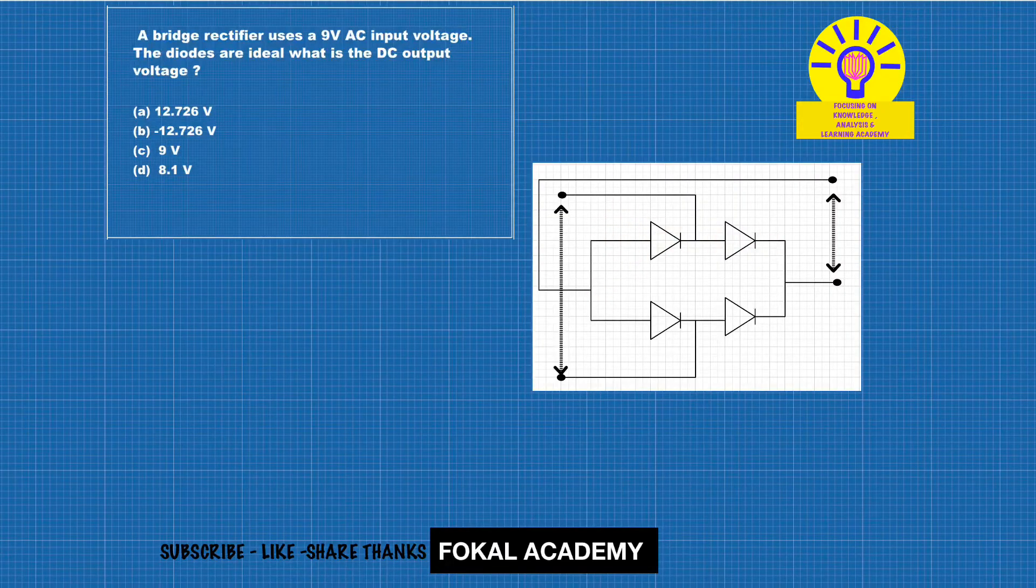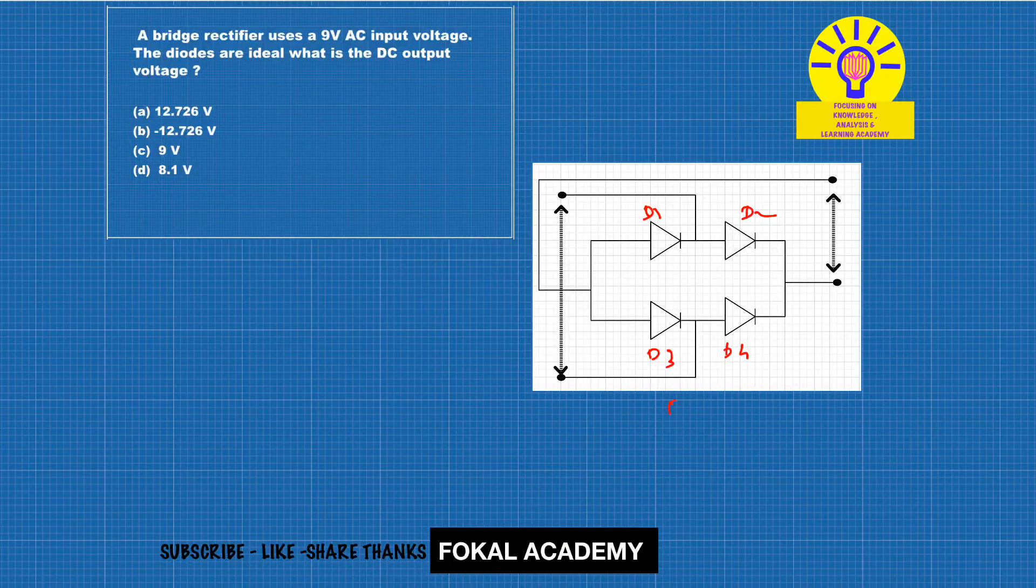This is diode D1, diode D2, diode D3, and diode D4. So this is the bridge rectifier circuit. Here input voltage is given as 9 volts, so it is nothing but RMS volts.